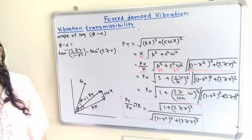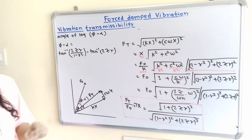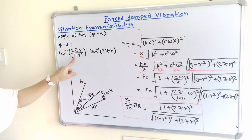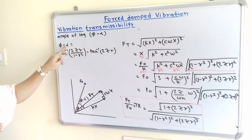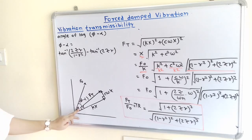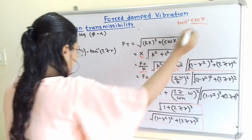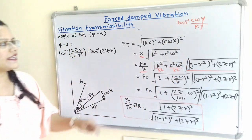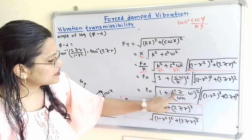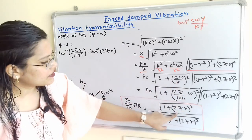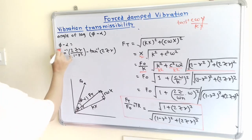We will find the angle of lag, which is φ − α. The formula for φ is tan⁻¹[2ζR / (1 − R²)] — refer to the previous video (link in description). For α, from the vector triangle: α = tan⁻¹(CωX / KX) = tan⁻¹(Cω/K) = tan⁻¹(2ζR). So the final formula for the angle of lag is: tan⁻¹[2ζR / (1 − R²)] − tan⁻¹(2ζR).